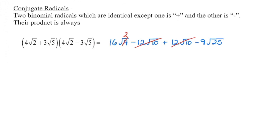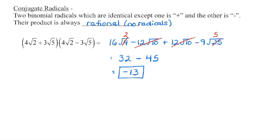The last terms, when multiplied, always produce a perfect square because we're multiplying the same radicand by the same number. So the square root of 25 is 5, and 5 times negative 9 is negative 45. We're left with only the first and last terms: 16 times 2 is 32, and negative 9 times 5 is negative 45, giving 32 minus 45 equals negative 13. With conjugate radicals, we always end up with a rational number — no radicals in the final solution.